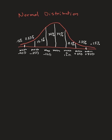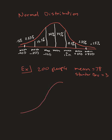For example, let's say 200 people were given a test. The mean test score was 78 and the standard deviation was 3 points. That means on average people were 3 points away from 78. Now if I draw a normal distribution with this information, it looks very similar to the diagram above.